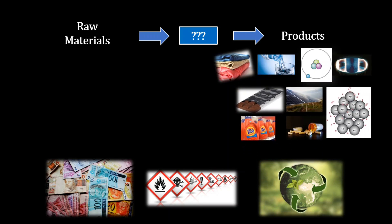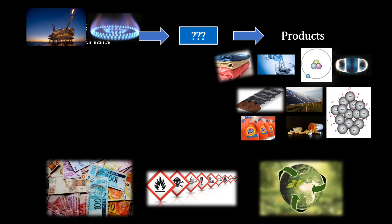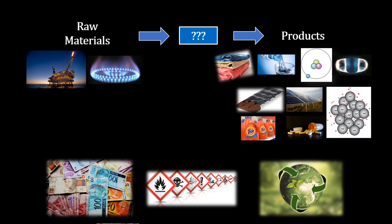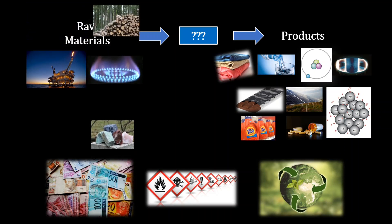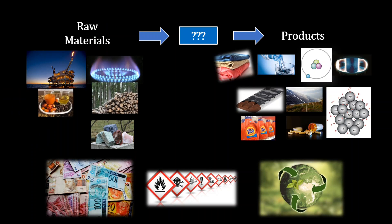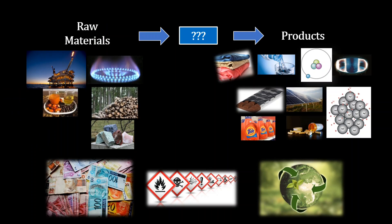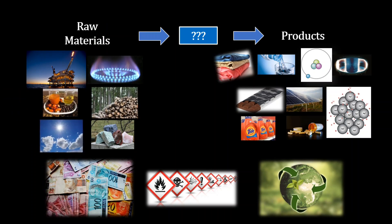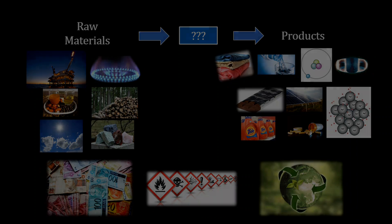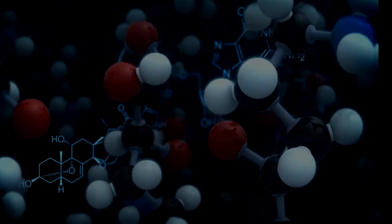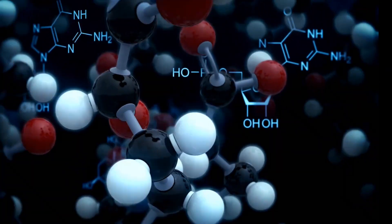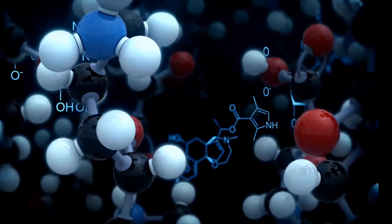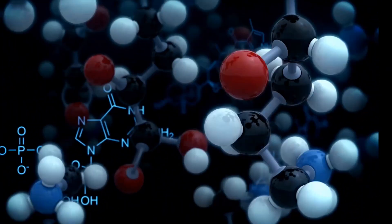For raw materials, crude oil is the most prevalent, but you could also have earth minerals, biomass and a fuel if your product is energy, and there are many more as well. Anything that involves a process or transformation of some kind is right in the ballpark of chemical engineering.